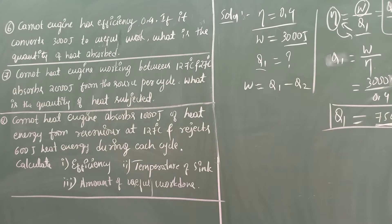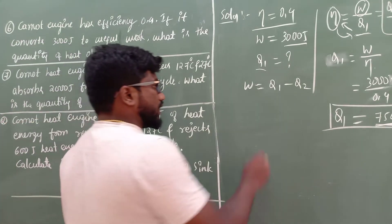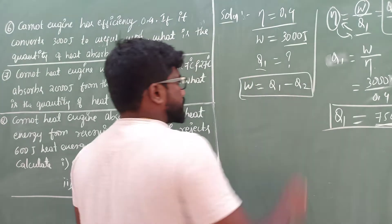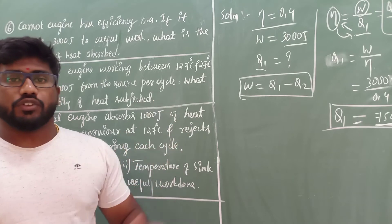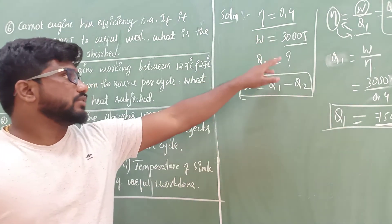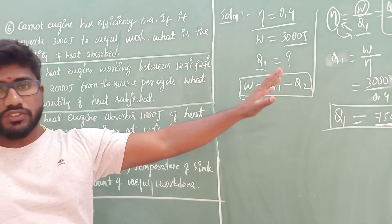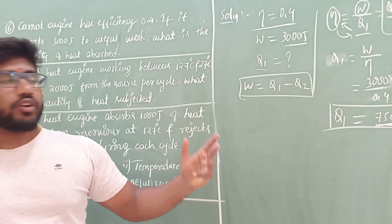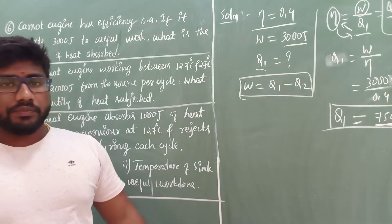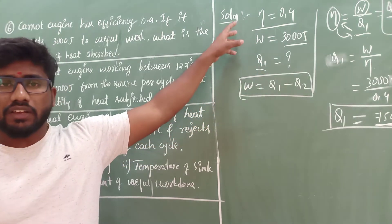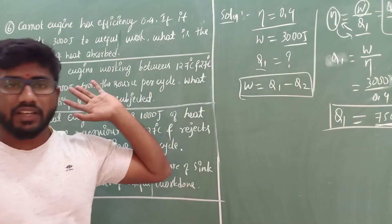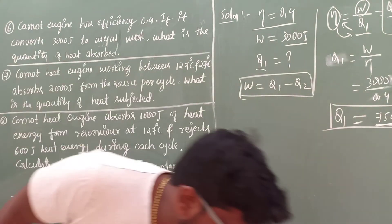That is the solution for question number six. The key takeaway is: don't get confused — a hint is given in every question. You must know which formula to apply based on the given data. Here, eta and W were given, so we used eta equals W over Q1. Identify which formula is relevant to the given data, substitute, and solve. The next numerical is of the same kind.